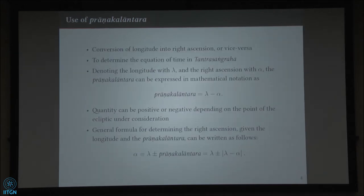Pranakalantra is used for the conversion of longitude to right ascension and vice versa. In the Tantra Sangraha of Nilakantha, it is used for determining the equation of time. Mathematically, if we denote longitude with lambda and right ascension with alpha, it can be expressed as lambda minus alpha. This quantity can be positive or negative depending on which quadrant of the ecliptic we are considering. Indian astronomers would take its absolute value and apply it positively or negatively, which gives the same effect.